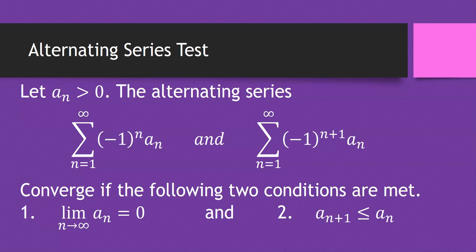Don't use this test with just positive terms. We just came out of sections 9.2, 9.3, 9.4, where we saw that going to 0 is not sufficient for convergence when terms are always positive. This alternating series test only works for alternating series. Do not try to apply it for series with positive terms.